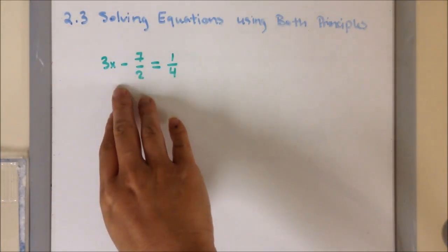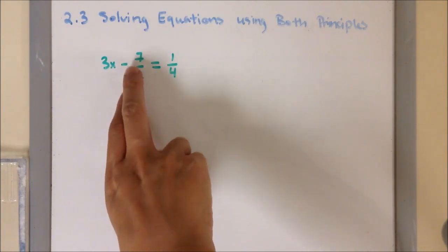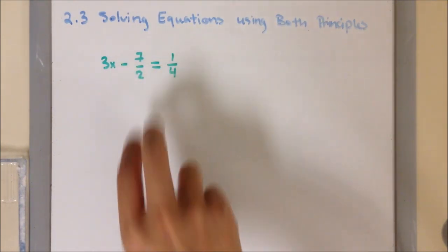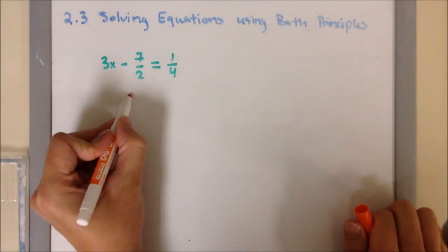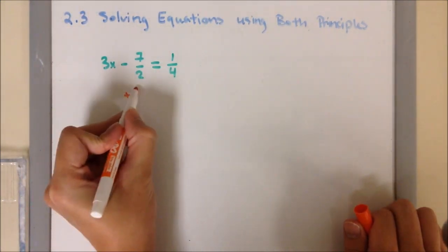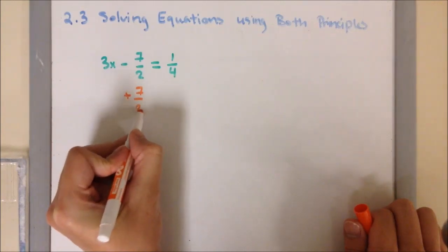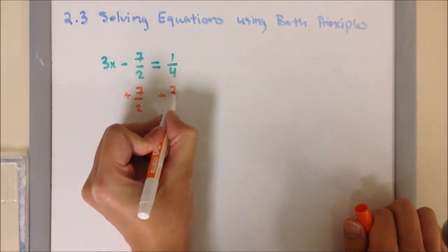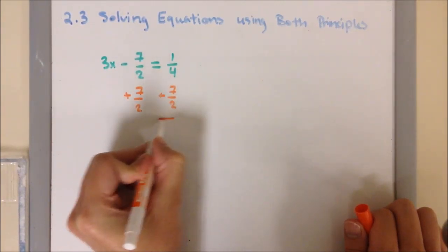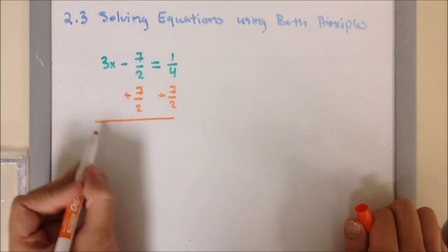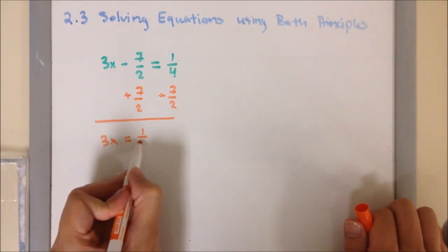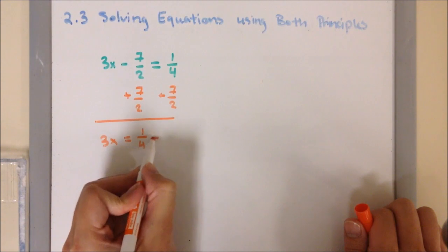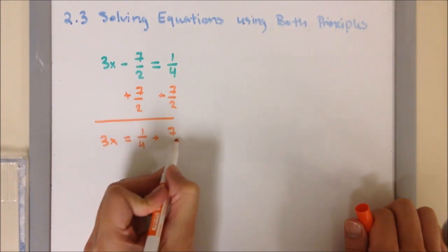In our first example, we have 3x minus 7/2 equals 1/4. First, we're going to apply the addition principle, so I'm going to add both sides by 7/2. So it's 3x equals 1/4 plus 7/2.